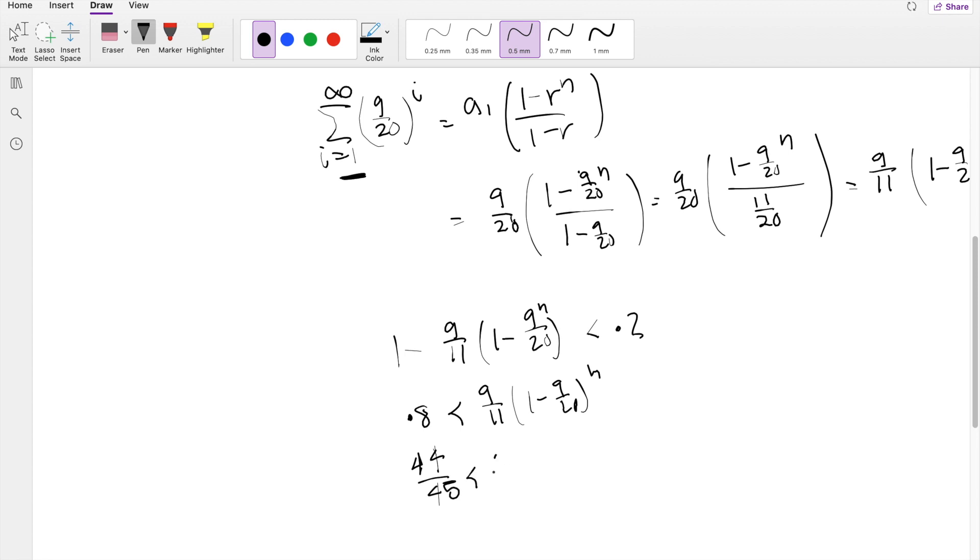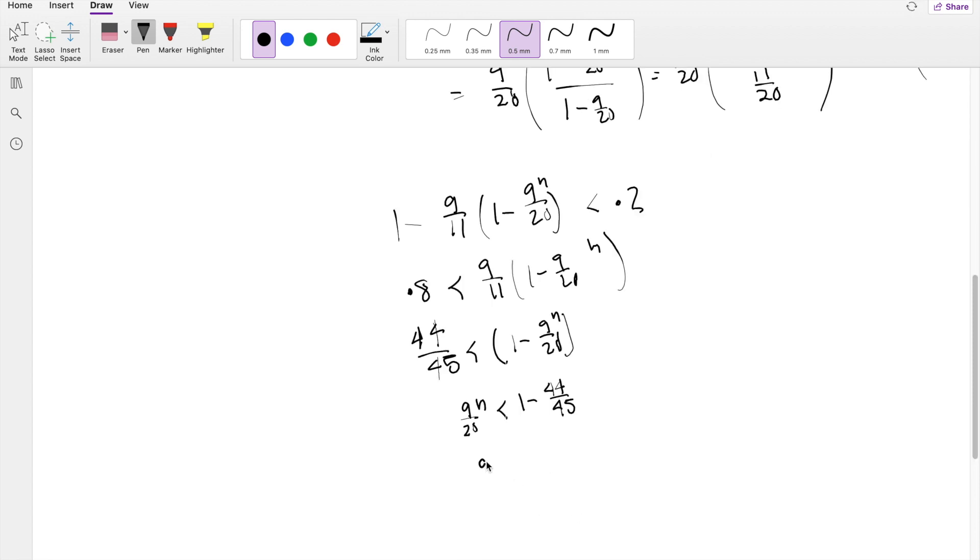44 over 45 is less than 1 minus 9 over 20 to the N. Bringing 9 over 20 to the other side: 9 over 20 to the N is less than 1 minus 44 over 45, so 9 over 20 to the N is less than 1 over 45.